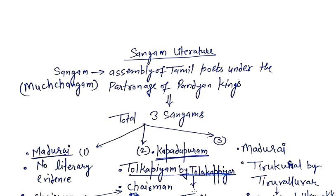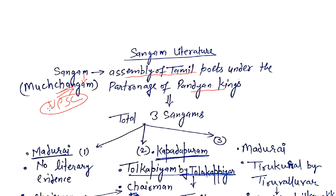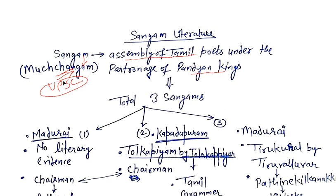Now we come to Sangam literature. The Sangam was the assembly of Tamil poets, which happened under the patronage of the Pandya kings. It is also known as Muchchangam. This alternative name — Muchchangam — is directly asked in UPSC, so it is important to note.